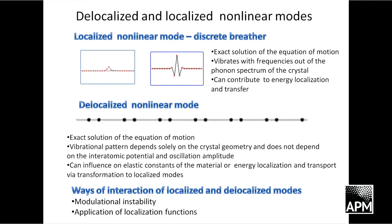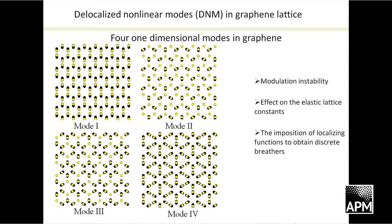There are two major ways of interaction of delocalized and localized modes: modulation instability and application of a localization function. Now let us switch to delocalized nonlinear modes in graphene.